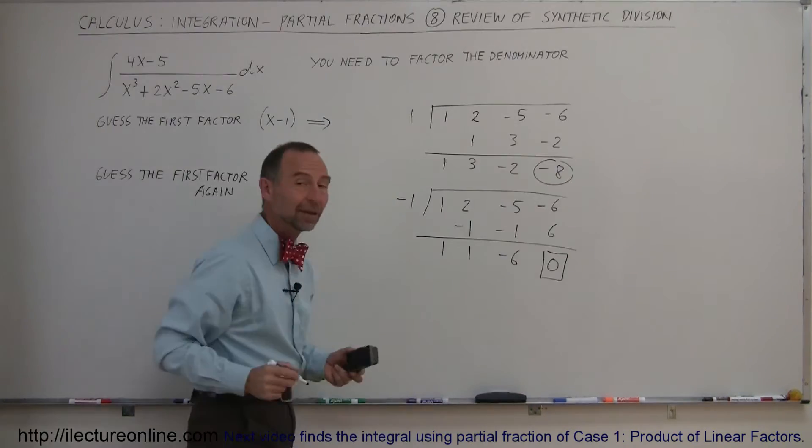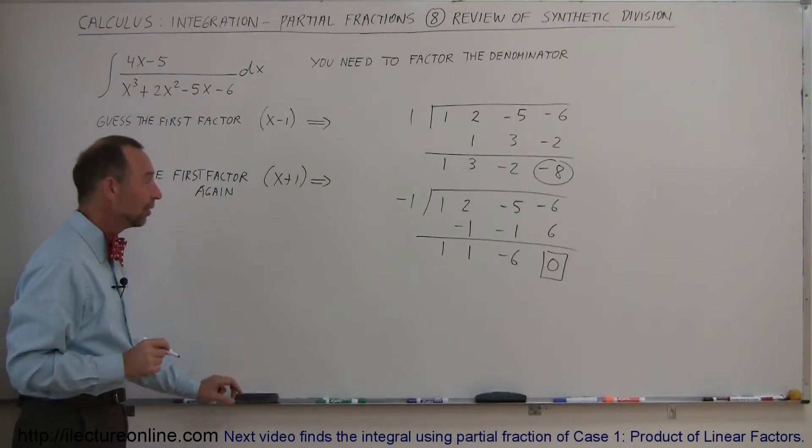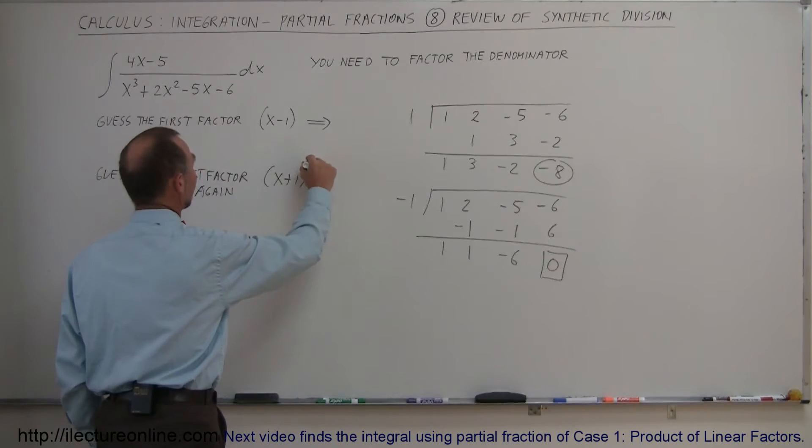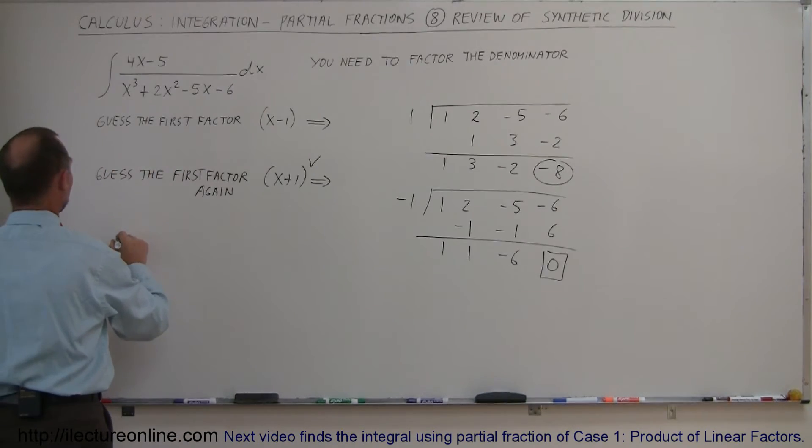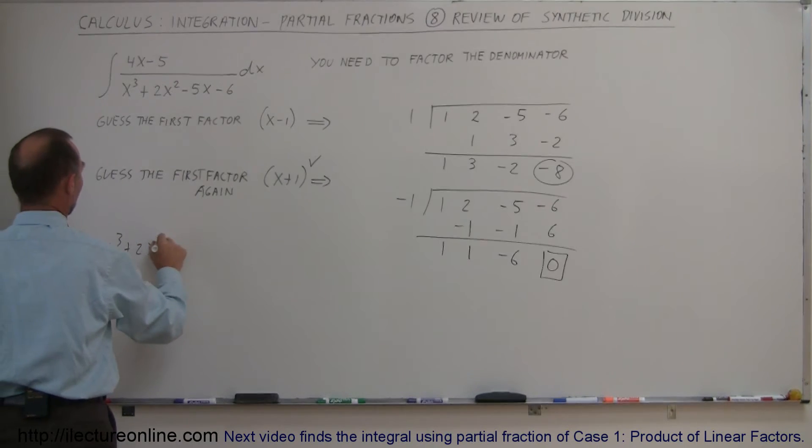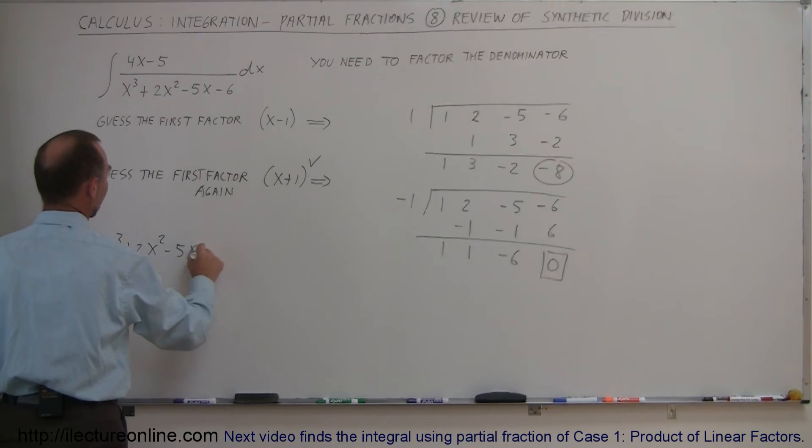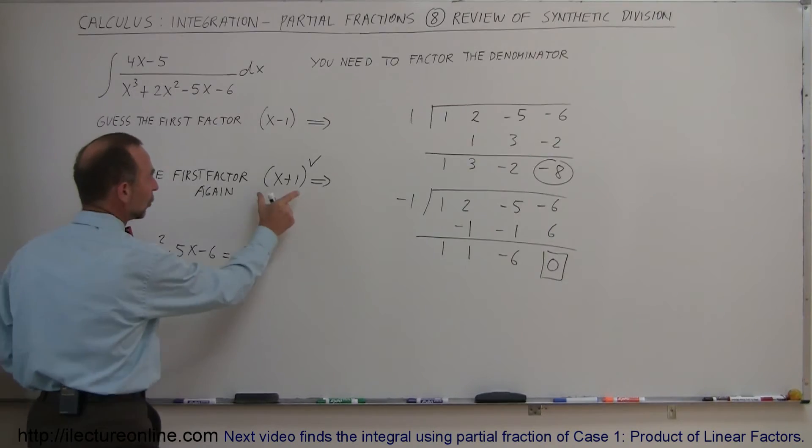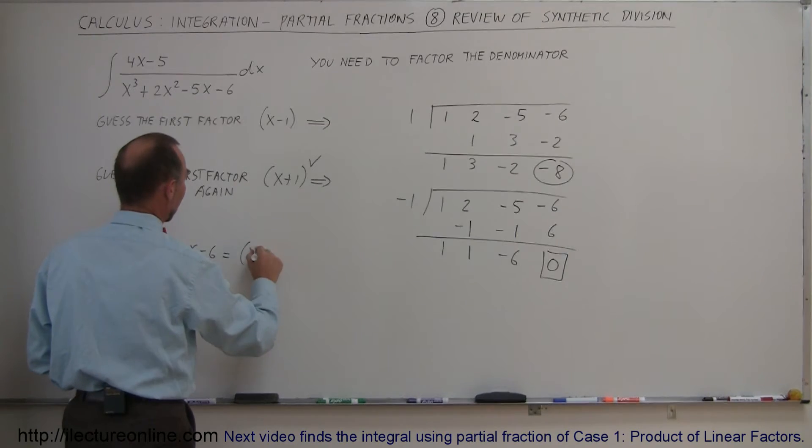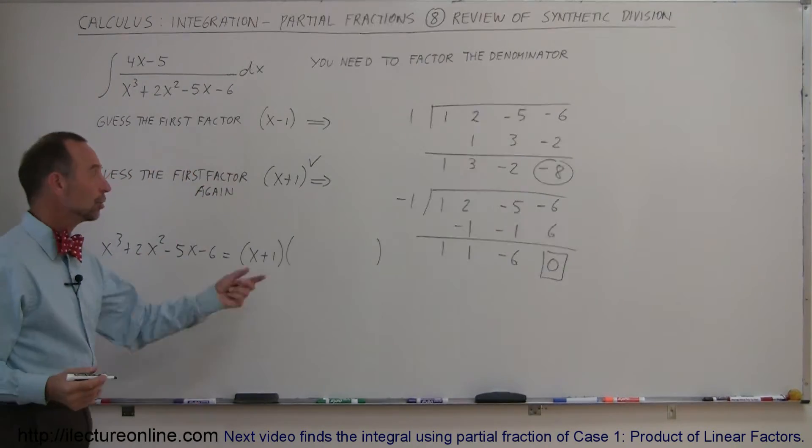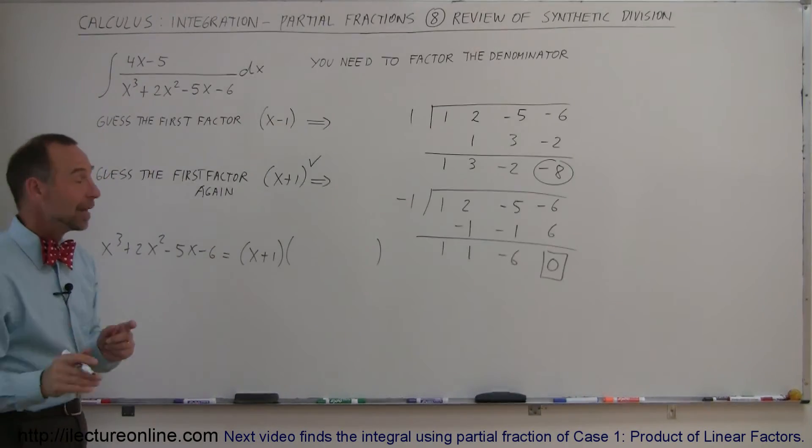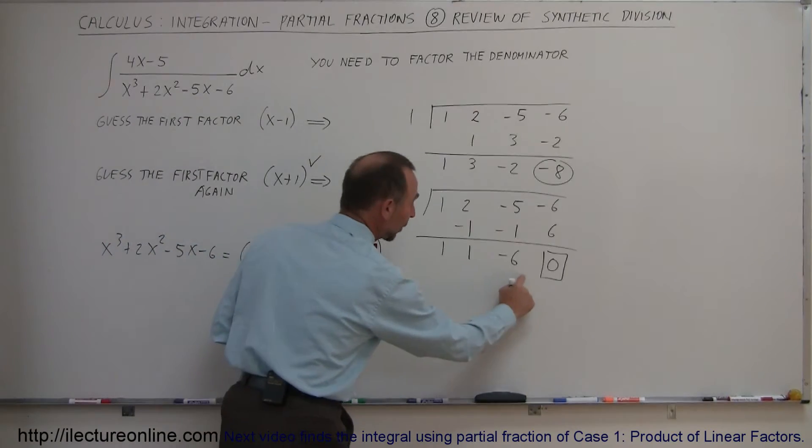Bingo, success this time, because that number became a 0. Therefore we know that this is one of the factors, which means we can now write our denominator as x cubed plus 2x squared minus 5x minus 6, now equal to x plus 1 times what's remaining after you take this factor out.